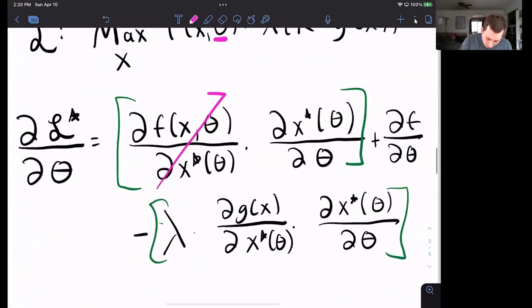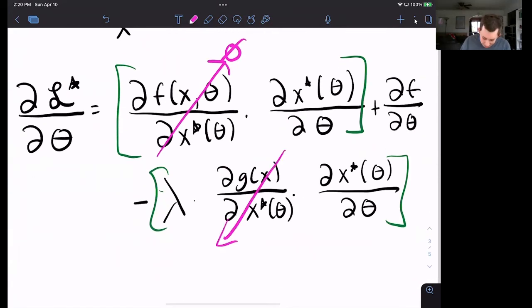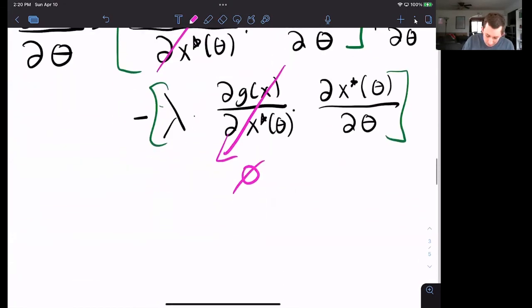Well, here's that same result here. So this is a zero. And here is this same result here, also a zero, which means that the derivative of the Lagrangian with respect to theta is just how our objective function changes as theta changes.